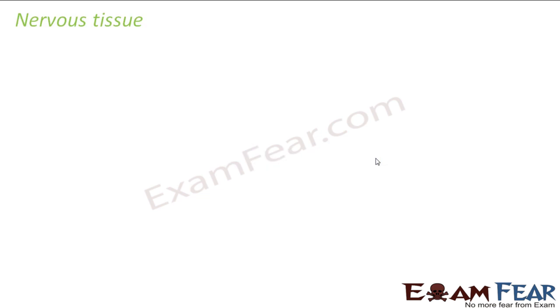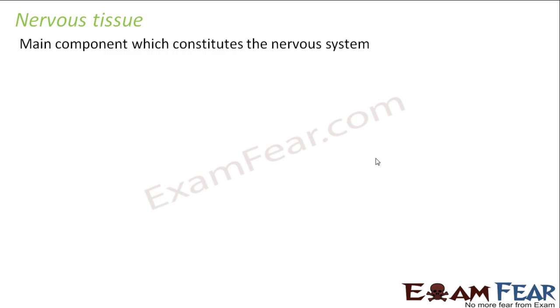So let us see what we are going to study about in nervous tissue. What is nervous tissue actually? It is the main component which constitutes the nervous system. The nervous system includes the brain, spinal cord, and the peripheral nerves which we have in our body. From the term 'nerve' it gets this name 'nervous.'